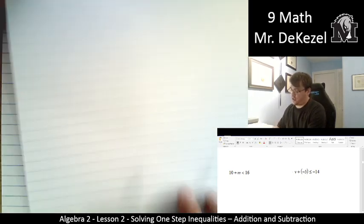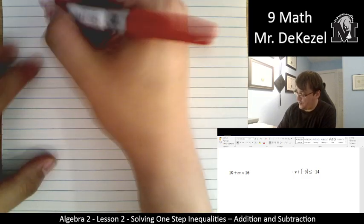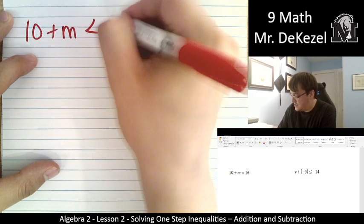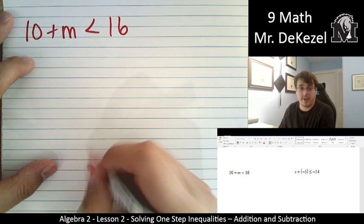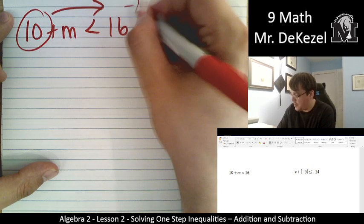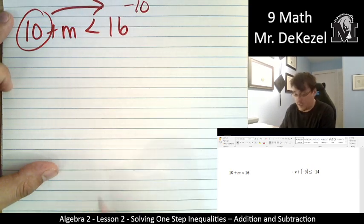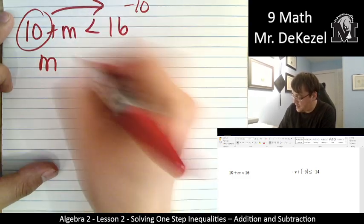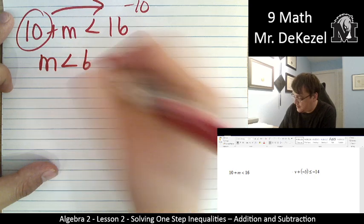All right. We've got two more to do. We've got 10 + m < 16. We want to get m all by itself, so I'm going to take the 10 and move it over. It's going to be -10 on this side. 16 - 10 is 6. m < 6.